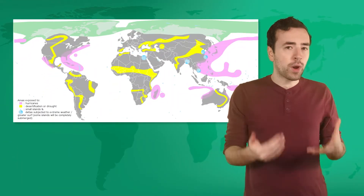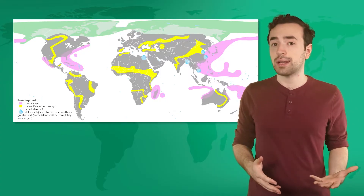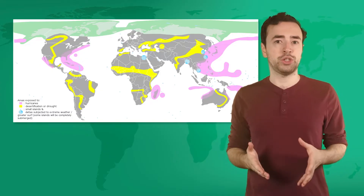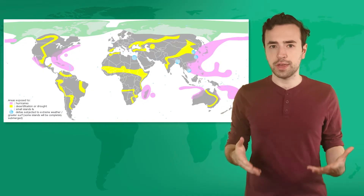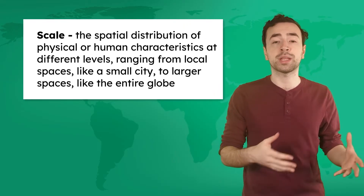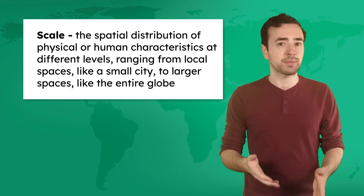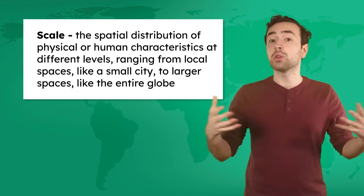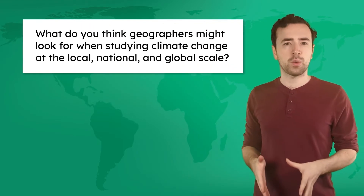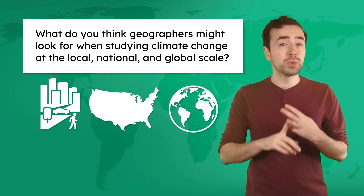By understanding where these changes are happening, geographers can identify trends, predict future impacts, and develop strategies to manage them. When analyzing these global issues, geographers also think about scale, which refers to the spatial distribution of physical or human characteristics at different levels, ranging from local spaces, like a small city, to larger spaces, like the entire globe. What do you think geographers might look for when studying climate change at the local, national, and global scale?